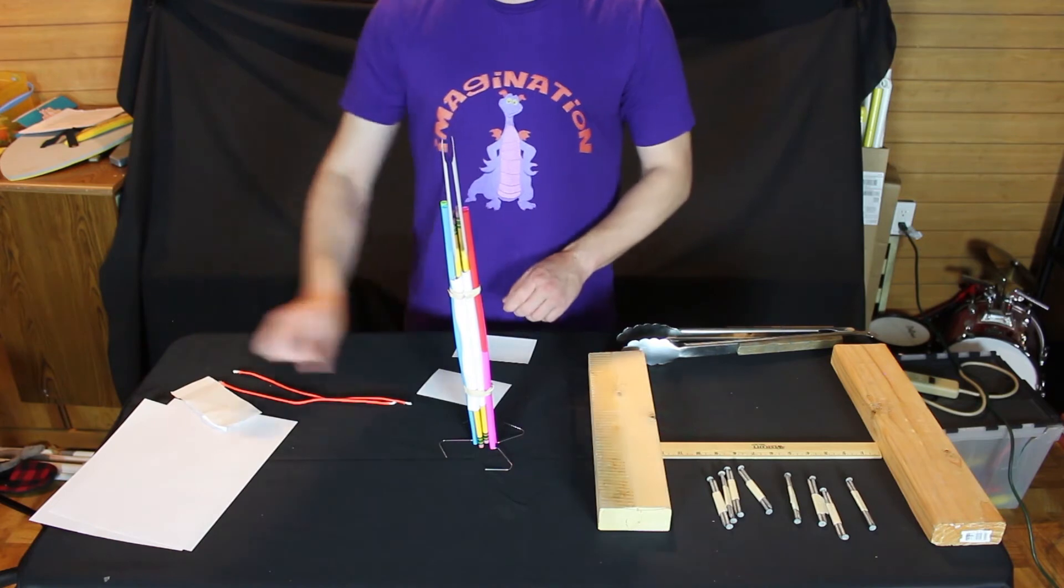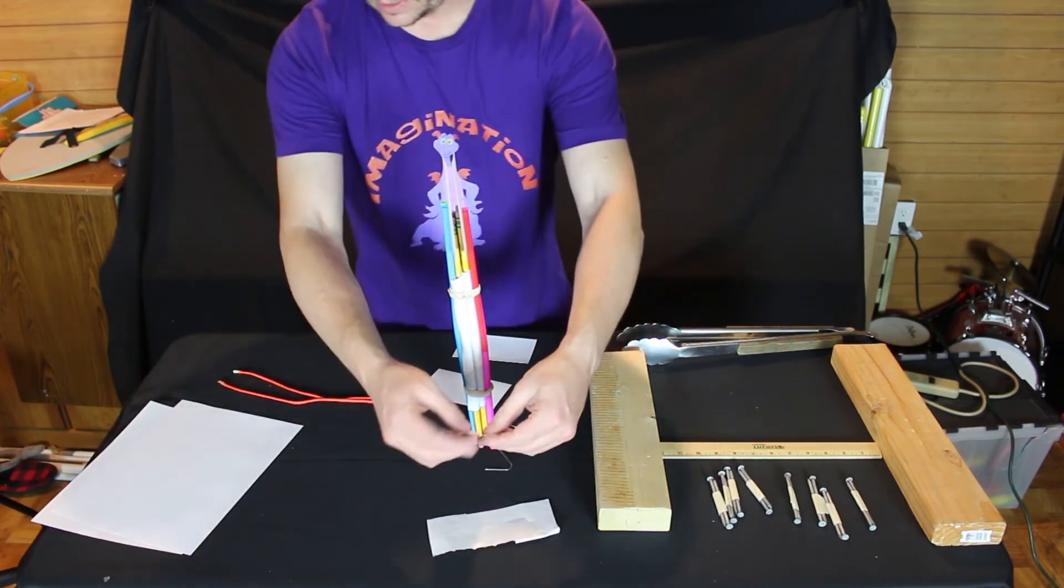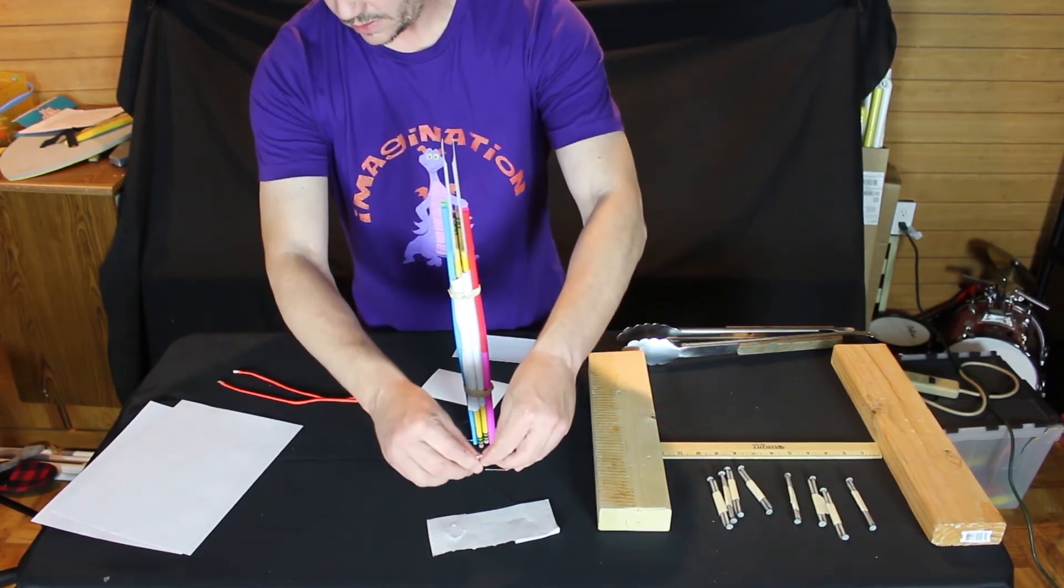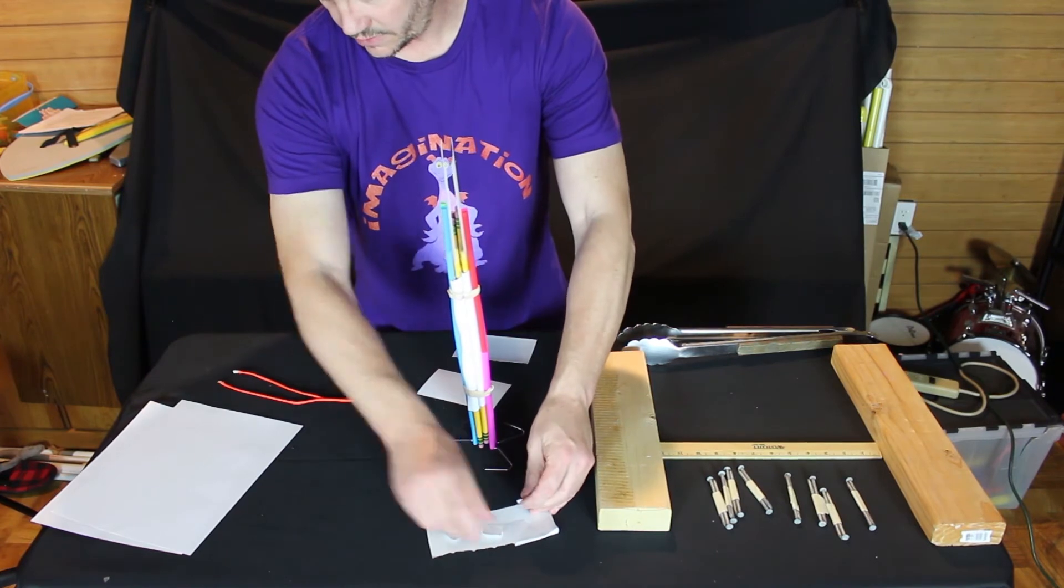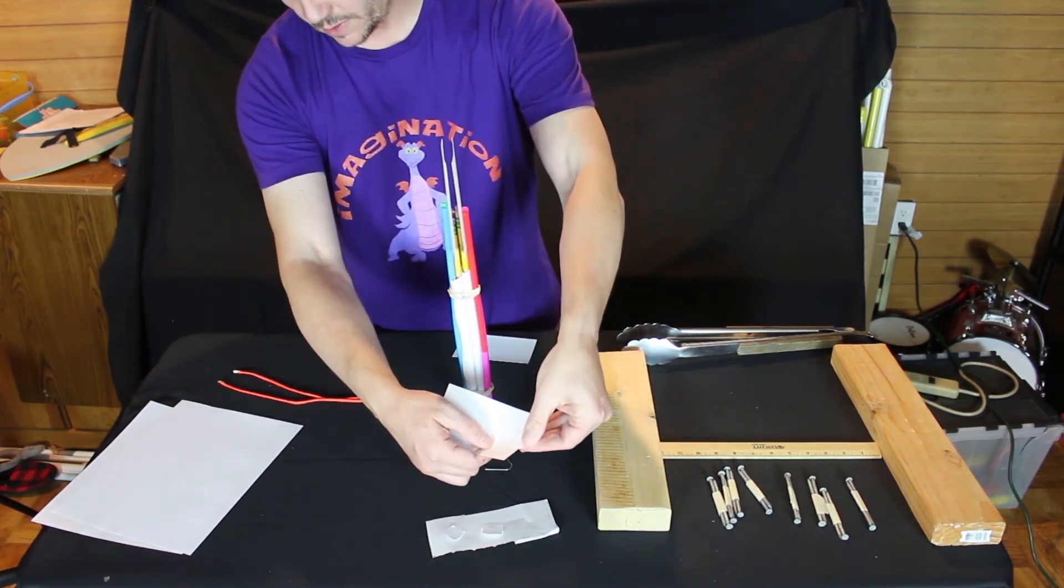We have one mailing label left. Do again. We're going to rip it into three pieces: one, two, and three. Take the first piece. Tape it onto here. And we're going to tape this up there.